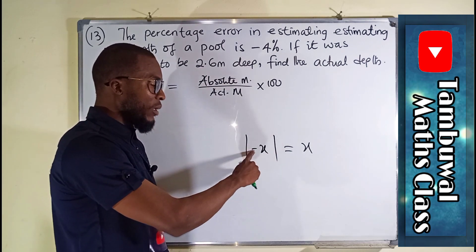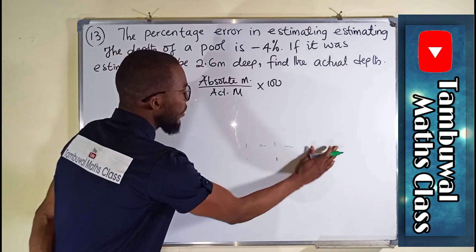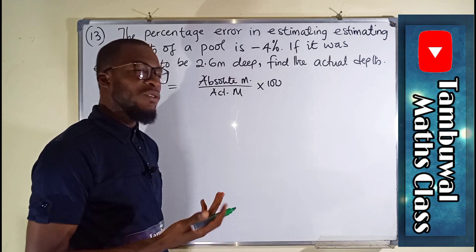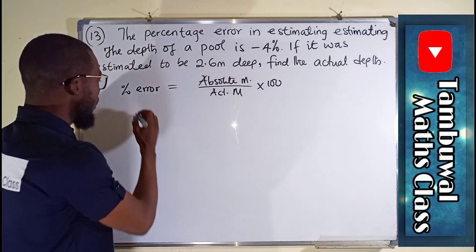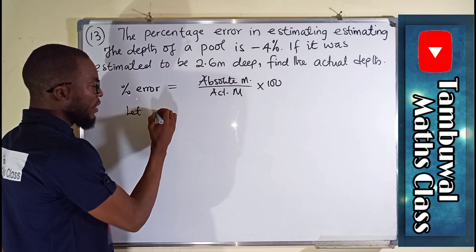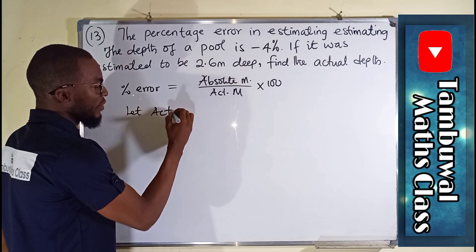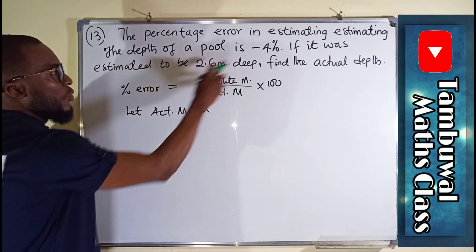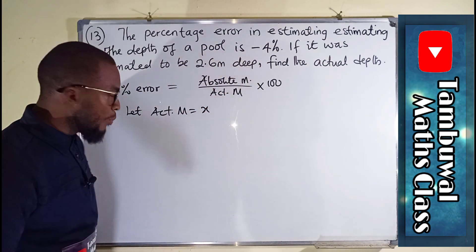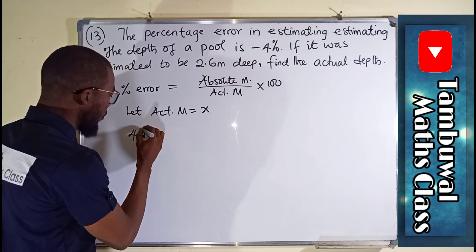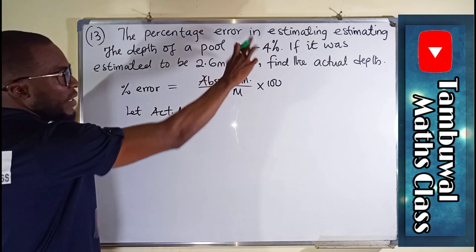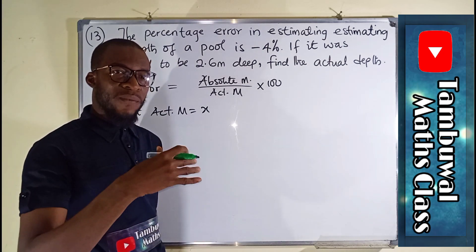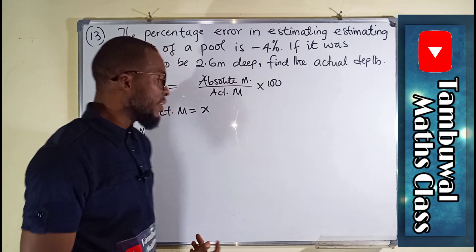So here we don't know the actual measure, so we can replace it with any variable, which in this case relates the actual measure to be x. So percentage error is what we have here as 4%. We call it 4%. Forget about the negative sign. It is just a way of showing us that we have an underestimated result.